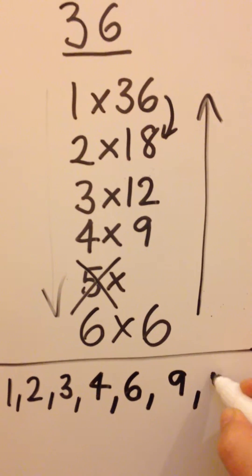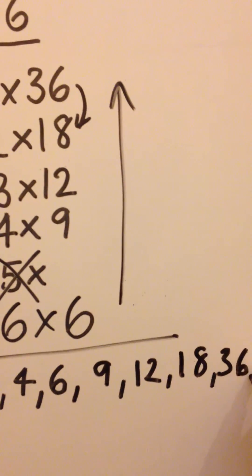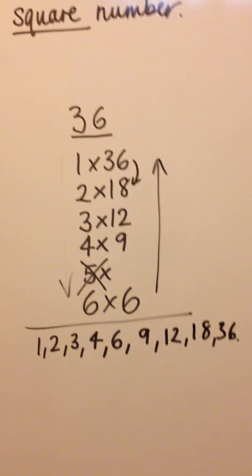then 9, 12, 18 and 36. That's how you find out the factors of a square number.